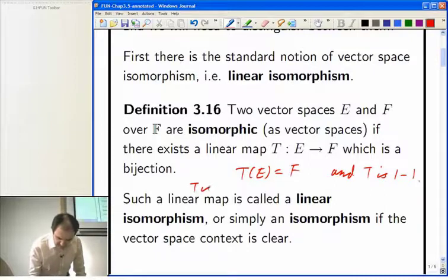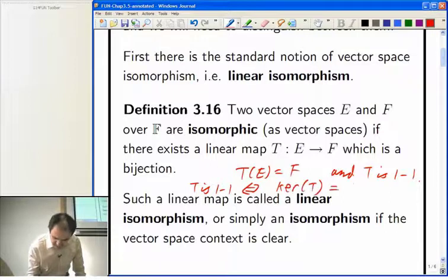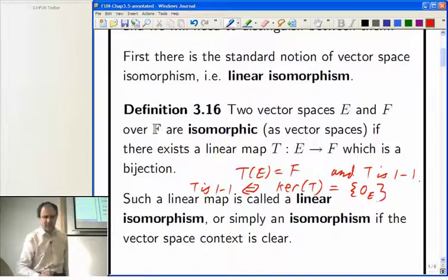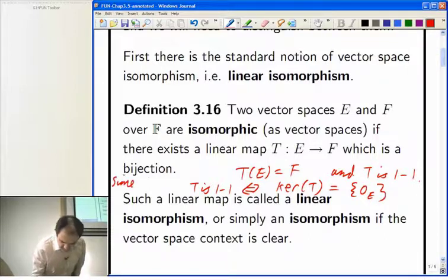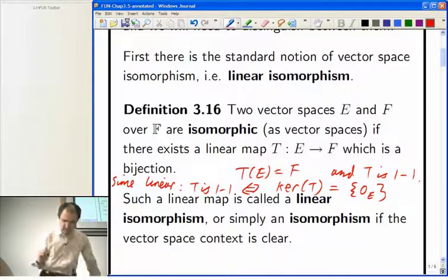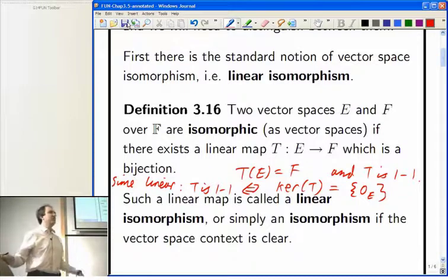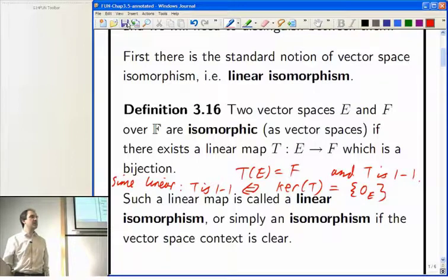And remember that T is 1-to-1 for a linear map, if and only if the kernel of T is just 0, the 0 element of E, because T is linear. That wouldn't be generally true for any odd function, but for a linear map, you're one-to-one if and only if you've got a trivial kernel.